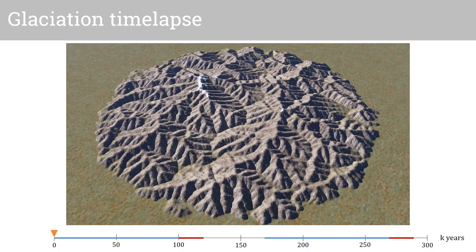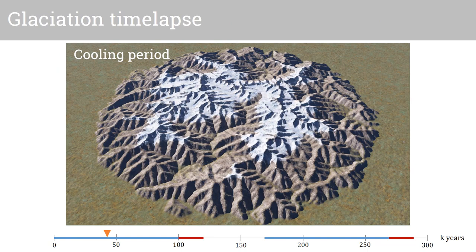On a distant view of a synthetic terrain, we demonstrate the impact of two successive glaciations.